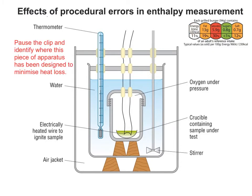Why not grab a scrap of paper, pause the clip, and see if you can identify where this piece of apparatus is. The bomb calorimeter has been adjusted to minimise heat loss, and the air jacket provides insulation.